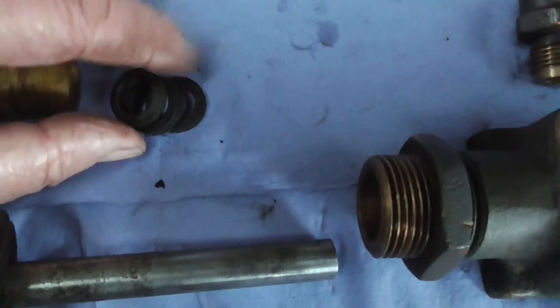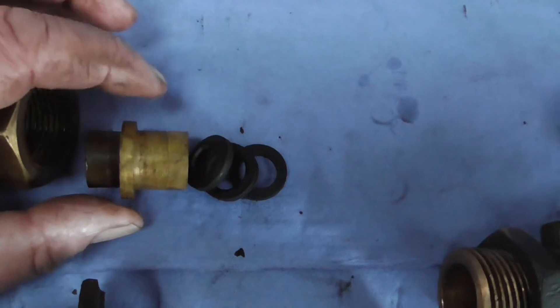These are the gland packing to stop it leaking back. This is the nut that holds the gland packing in.